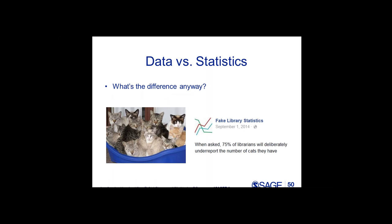The first thing I want to address is the difference between data and statistics, because in normal conversation we use these terms interchangeably, but the difference is really very important when answering reference questions. On this slide, I have a statistic — a fact or figure which gives us an observation we can easily interpret. If we wanted the data, that would be the raw material behind the statistic: a list of every single librarian asked a question and their individual responses regarding their propensity to under-report cat ownership. Those individual responses would be the data.